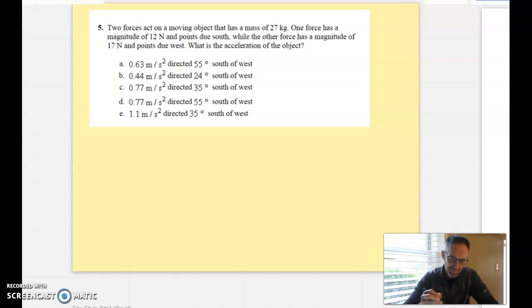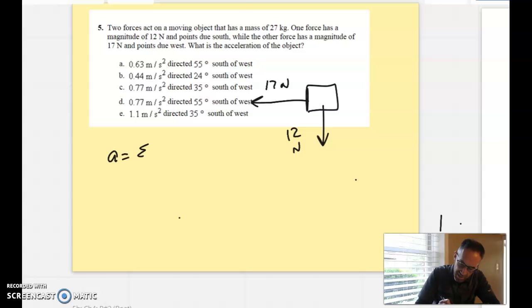Here's an example that has two forces that are acting on an object that has a mass of 27 kilograms. One is a force of 12 newtons to the south and one is 17 newtons to the west. They want the acceleration of the object. Well, if I want the acceleration of the object, that's going to be the net force of the object divided by the mass.